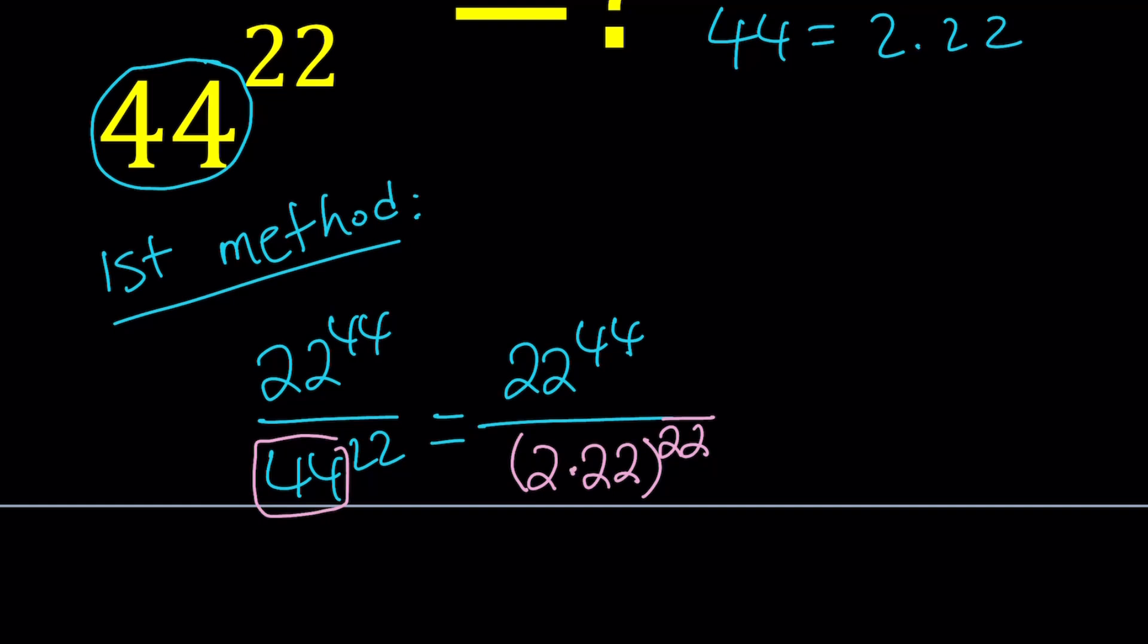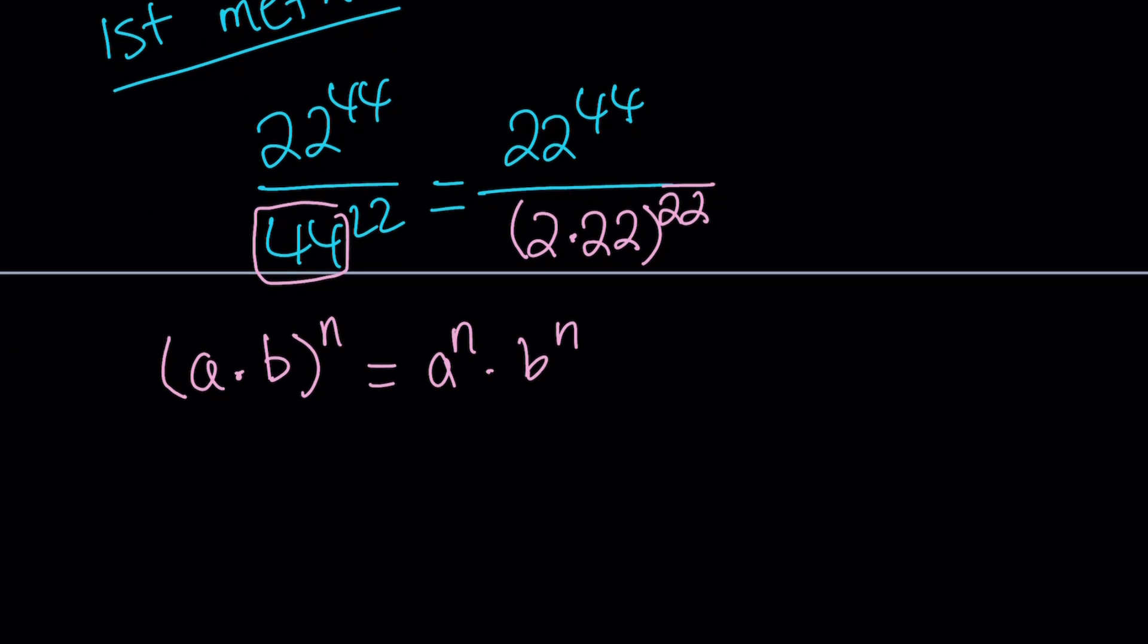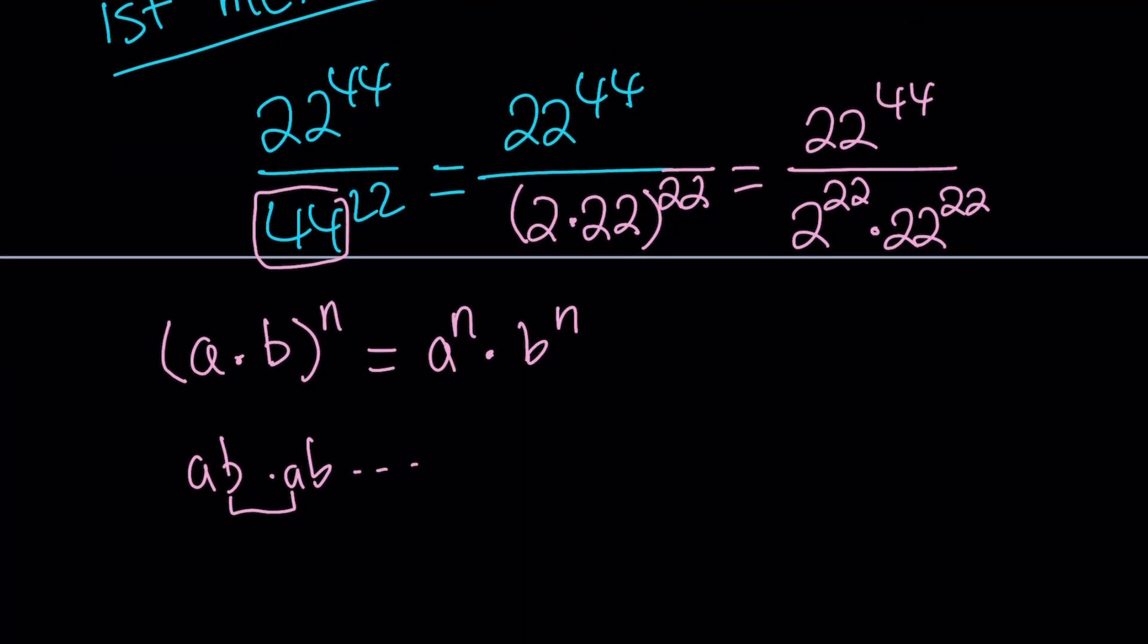When you have something like a times b to the power n, how do you simplify it? The formula is: a times b in parentheses to the power n can be written as a to the power n times b to the power n. This is very easy to prove if n is an integer. Commutativity and associativity allow us to put the a's together and b's together.